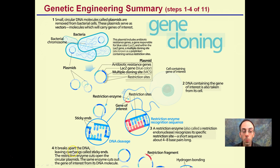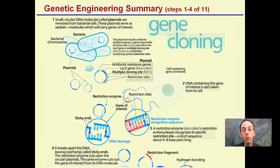Step four: the restriction enzymes break apart the DNA, leaving overhanging regions called sticky ends. These restriction enzymes cut open the circular plasmids, and the same enzyme cuts our gene of interest. It's important that the same enzyme is used because we want these to rejoin to one another — we want them cut at the very same specific sequence.